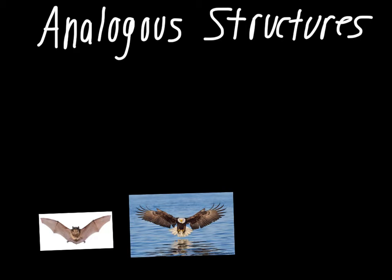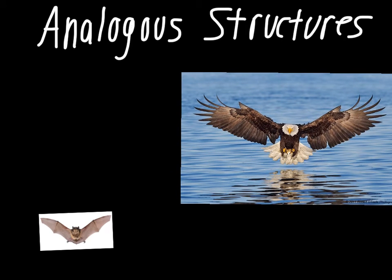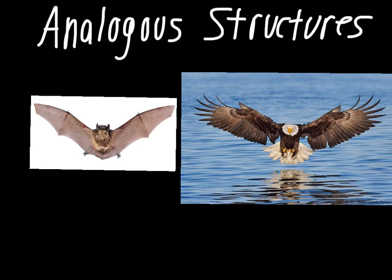The last one to talk about is the idea of analogous structures. Even though they're used for the same purpose, they're not structurally the same. Importantly, this does not indicate a close evolutionary relationship. The idea with analogous structures is that they function the same way but evolved independently. A simple example is the eagle as a flighted species and the bat as a flighted species — these two are not evolutionarily related at all. The bat is a mammal and the eagle is a bird, in two vastly different categories.